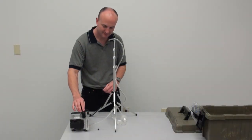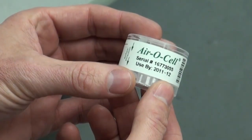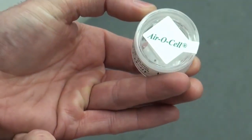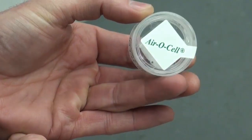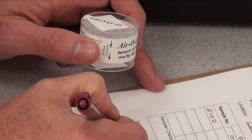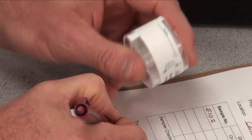Turn off the sampling pump. Verify the use-by date on the aerosol cassette and check that the security band around the cassette has not been broken. Record the cassette serial number on the lab chain of custody sheet along with any other required information.